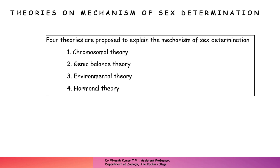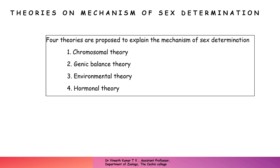The first one we will discuss is the chromosomal theory of sex determination. It was proposed by Correns and this theory is otherwise called as the theory of heterogamesis — because there are two different types of sex chromosomes which determine the sex of an organism, the theory is called the theory of heterogamesis.